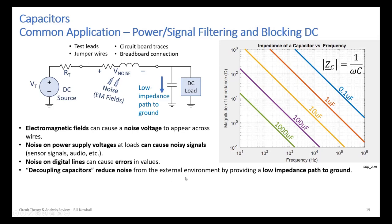Adding a capacitor in parallel with the load provides a low-impedance path to ground for high-frequency noise. This is called a decoupling capacitor. The DC component charges the capacitor but no steady-state current flows through it — impedance is infinite for DC. For AC noise at higher frequencies, the capacitor looks like a very low impedance, essentially shorting the noise to ground. You can see from the impedance vs. frequency plot that a 1,000 µF capacitor reaches 1 ohm just above 1 kHz, and a 1 µF capacitor reaches 1 ohm just above 100 kHz.